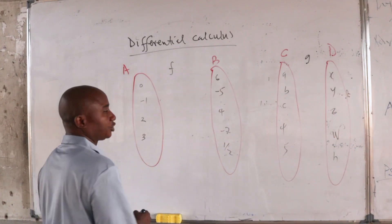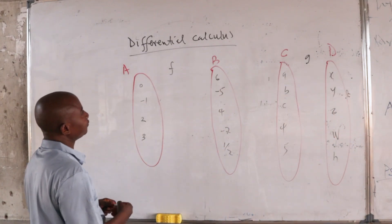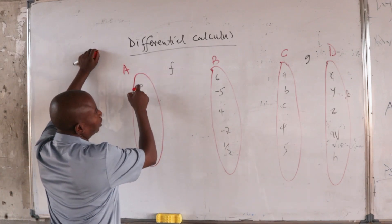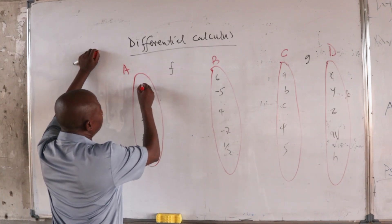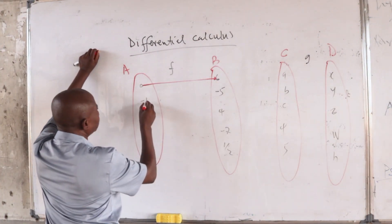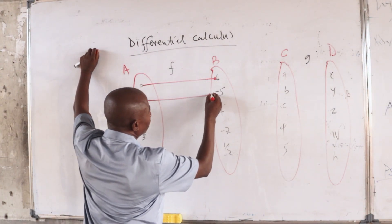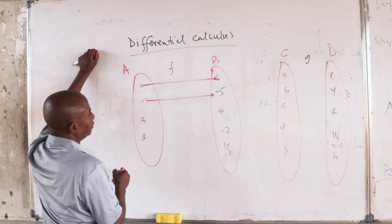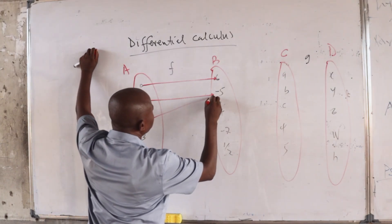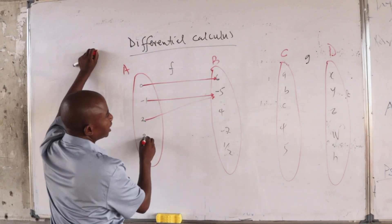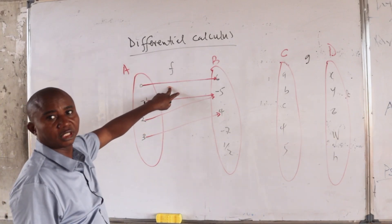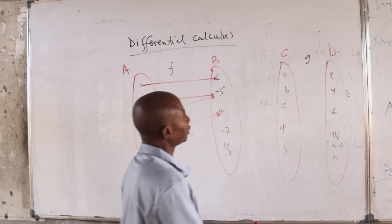Consider a situation where we have a relation, a map of this form that takes 0 to 6, it takes -1 to -5, it takes 2 to -5, takes 3 to 4. This is this model here.